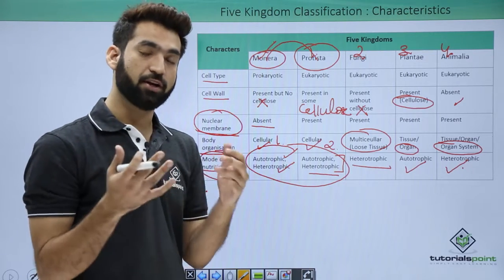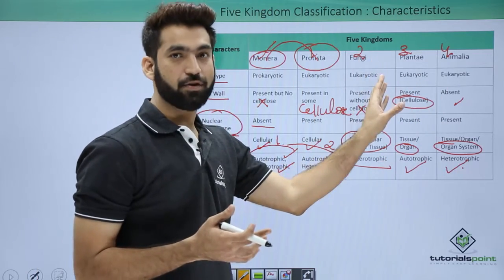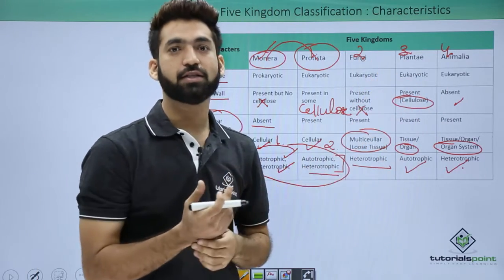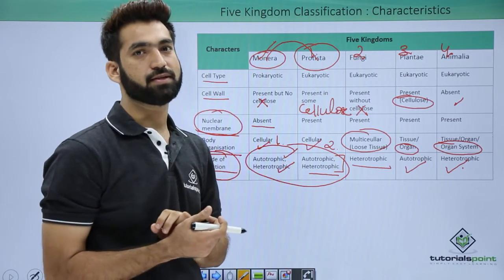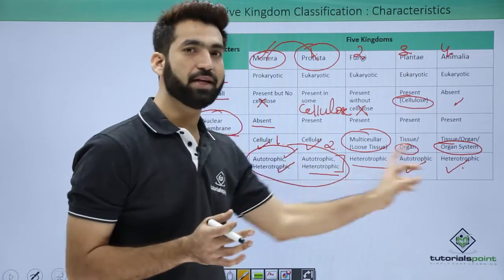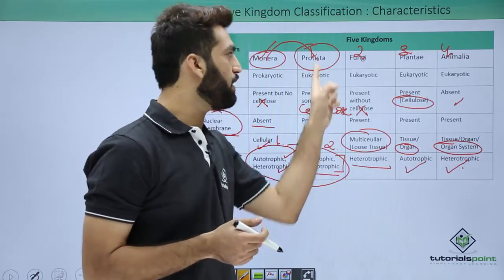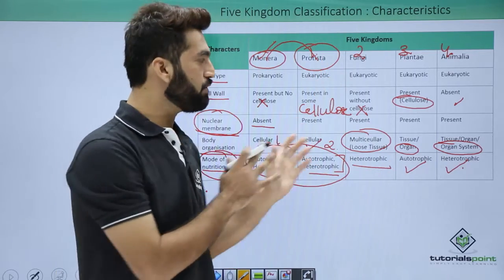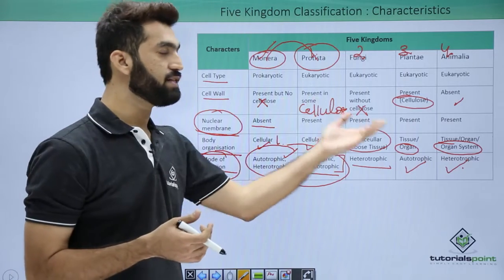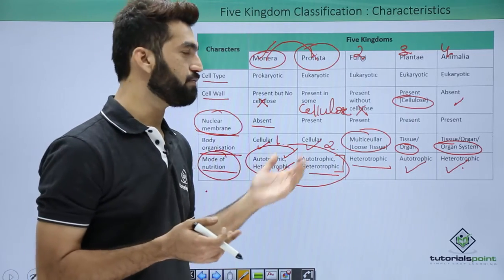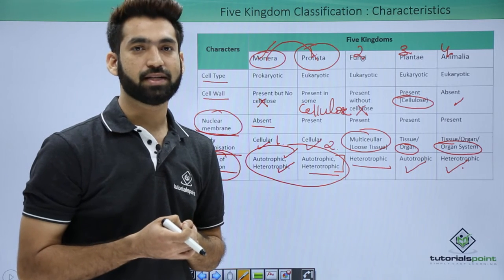If the question asks which kingdom among eukaryotes has the maximum nutritional diversity, the answer is Protista, since it has both autotrophic and heterotrophic modes — though no chemo-autotrophy. Remember: among all five kingdoms the answer is Monera; among eukaryotes only, the answer is Protista. This table summarizing the differences between all five kingdoms will be helpful for comparisons. The next session will detail the six kingdom classification system.